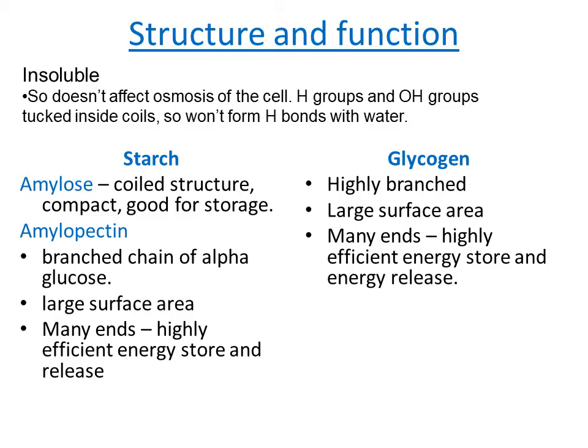Starch is stored in plants and glycogen is stored in animals. In both instances they are not particularly soluble. Plants have a cell wall and are less vulnerable to excess water uptake, but for animals it would be very problematic to store large quantities of glucose in cells. So glucose is converted to glycogen with much less solubility and therefore much less osmotic impact, not lowering the water potential in the same way glucose would.